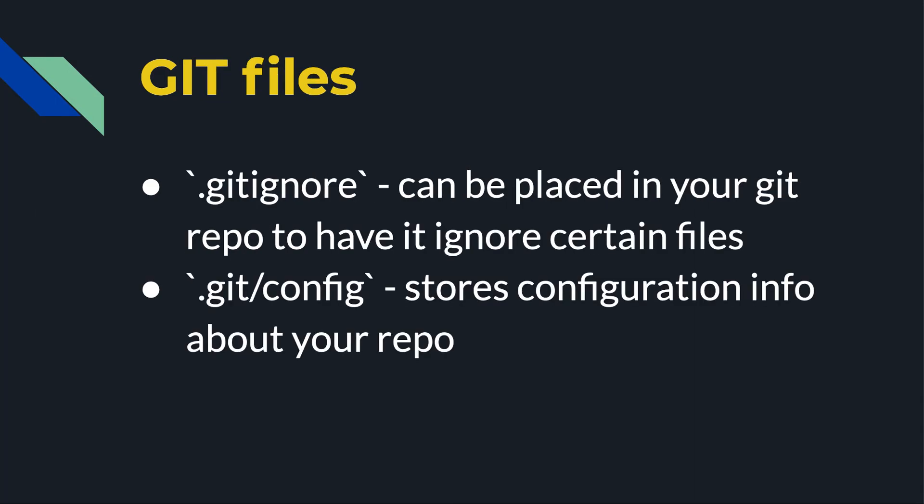So that's what we're going to use — GitHub. Finally, there are two files you might want to be aware of. The .gitignore file can be placed inside of your local repository to have it ignore certain files — maybe you don't want it to track changes of certain files. And then there's a .git/config that stores configuration information about your repo. There are some other files as well, but these are the most important ones. Next video, I'll do a demo of this.